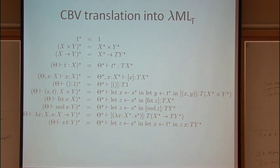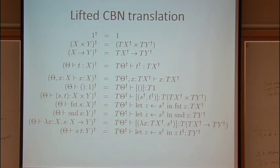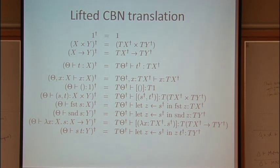So there's a call-by-value translation from the lambda calculus into the computational meta-language. And then there's also a call-by-name translation for PCF, which doesn't really use the T anywhere except on co-products. And then there's a lifted call-by-name translation, which is the thing that corresponds to Haskell, which puts in a whole bunch of T's everywhere.